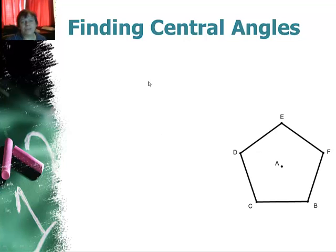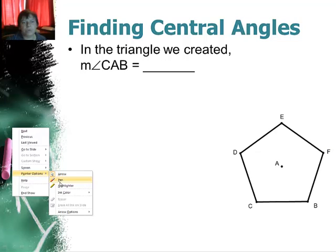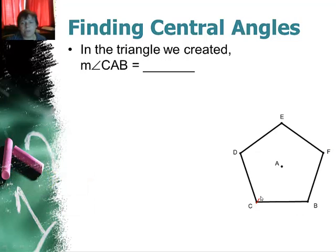Alright so finding the central angle here what I'm going to do is take a look at the triangle CAB. I'm going to connect it not very well because I'm using my mouse. There we go. So there's a triangle and I'm going to look at angle CAB. So this angle right here. So I'm going to take 360 divided by five which gives me 72.